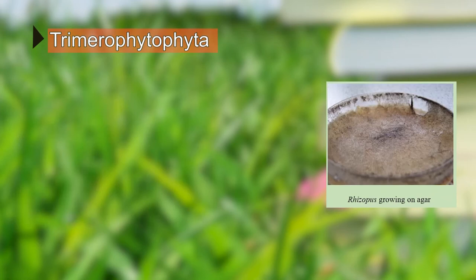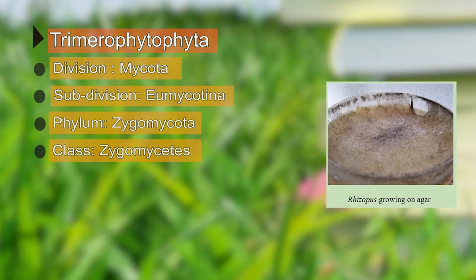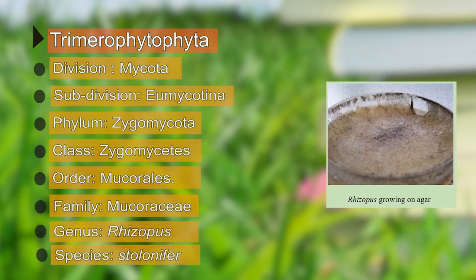Looking at the taxonomic position of Rhizopus: it belongs to the division Mycota, subdivision Eomycotina, phylum Zygomycota, class Zygomycetes, order Mucorales, family Mucoraceae, genus Rhizopus, and the species discussed here is stolonifer. Here you can see the picture of Rhizopus growing over the surface of agar media in vitro.